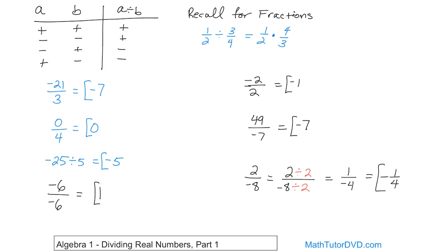I want to point something out: anytime you divide something, it can be thought of as multiplying by the reciprocal. You don't need to know this to solve the problems — I'm just going a little deeper. For instance, negative 21 divided by three can be rewritten as negative 21 multiplied by the reciprocal of three, which is one-third. This also explains why the sign rules are the same for multiplication and division, because all division really is multiplication.